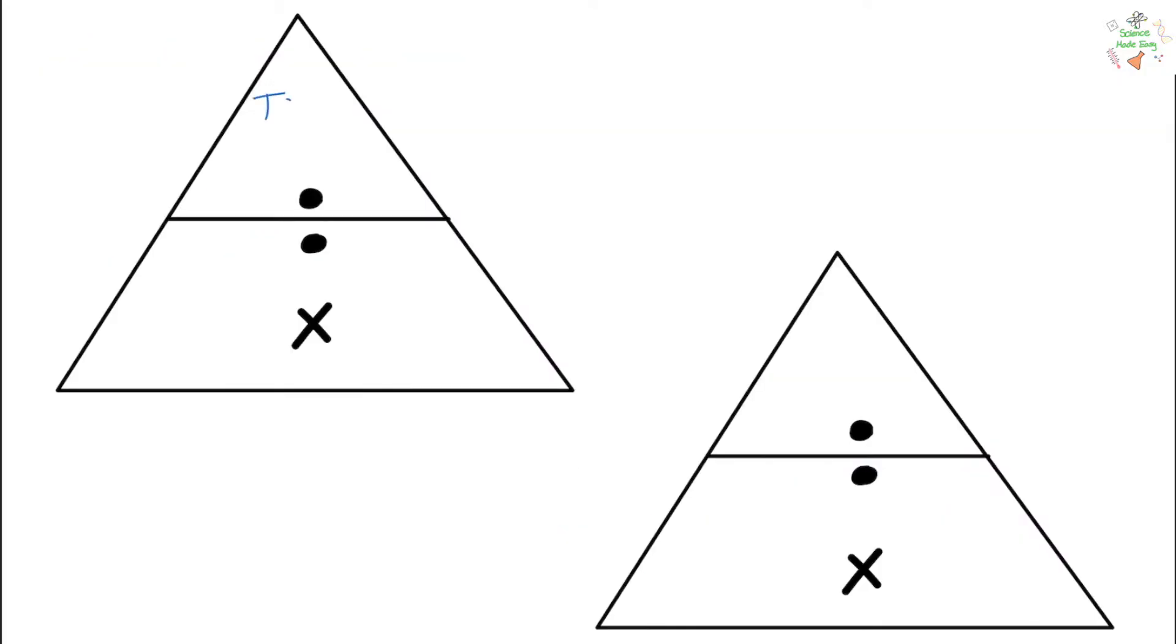If you want to find the total magnification, you need to times the magnification of the eyepiece lens by the magnification of the objective lens. And then to find the magnification, you need to divide the image size by the real size. The image size is just what you see in the microscope, and the real size is the size of the actual thing you're looking at.